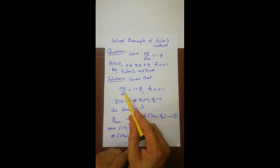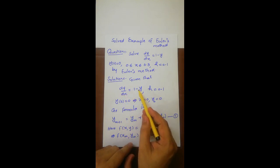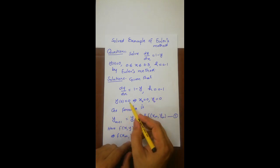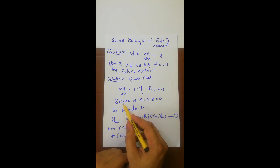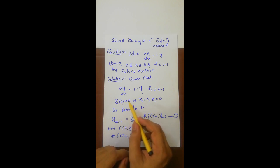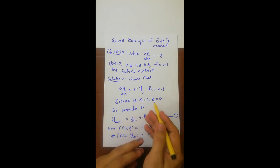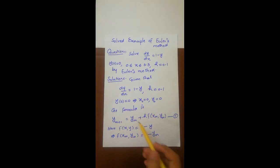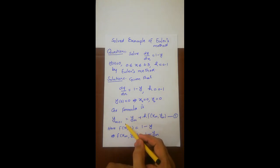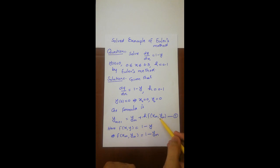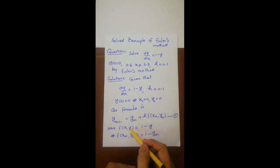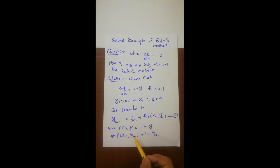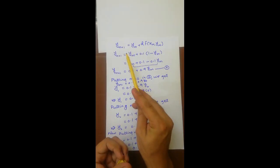The differential equation is given as dy/dx = 1 - y, h = 0.1, and y(0) = 0. This means that when x is 0, y is 0 — so x₀ = 0 and y₀ = 0. The formula for Euler's method is y_{m+1} = y_m + h·f(x_m, y_m). The function is f(x, y) = 1 - y, so f(x_m, y_m) = 1 - y_m.